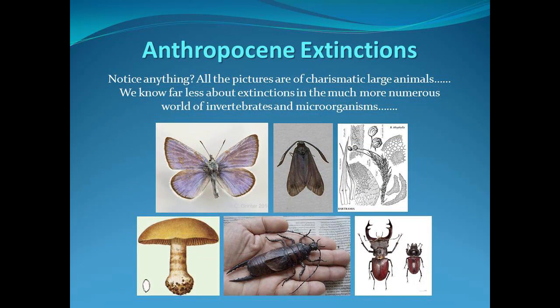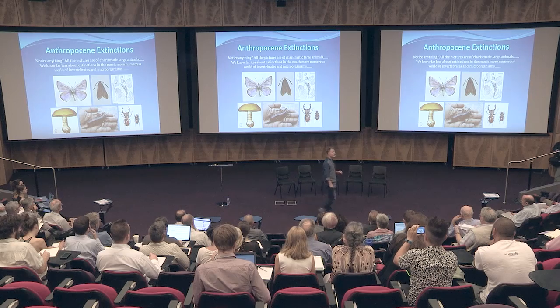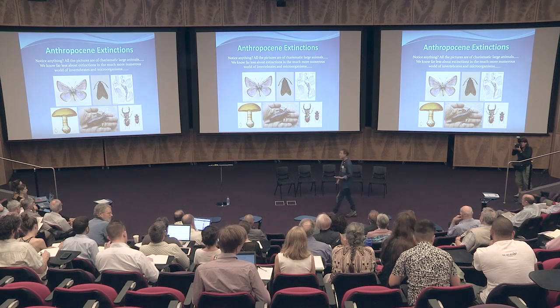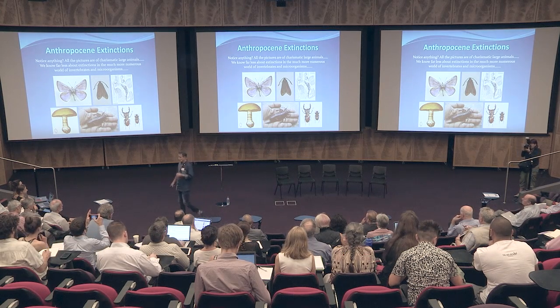One thing you might notice here is the embiggening of the Anthropocene. Most of the things on the planet are smaller than a matchbox, and most are much, much smaller. All the pictures you can see are of charismatic large animals, but we need to be much more concerned about the extinction of much smaller things. If pollinators went extinct tomorrow, we'd all be dead within about two months. We do know about some extinctions of invertebrates and microorganisms, but not very many.